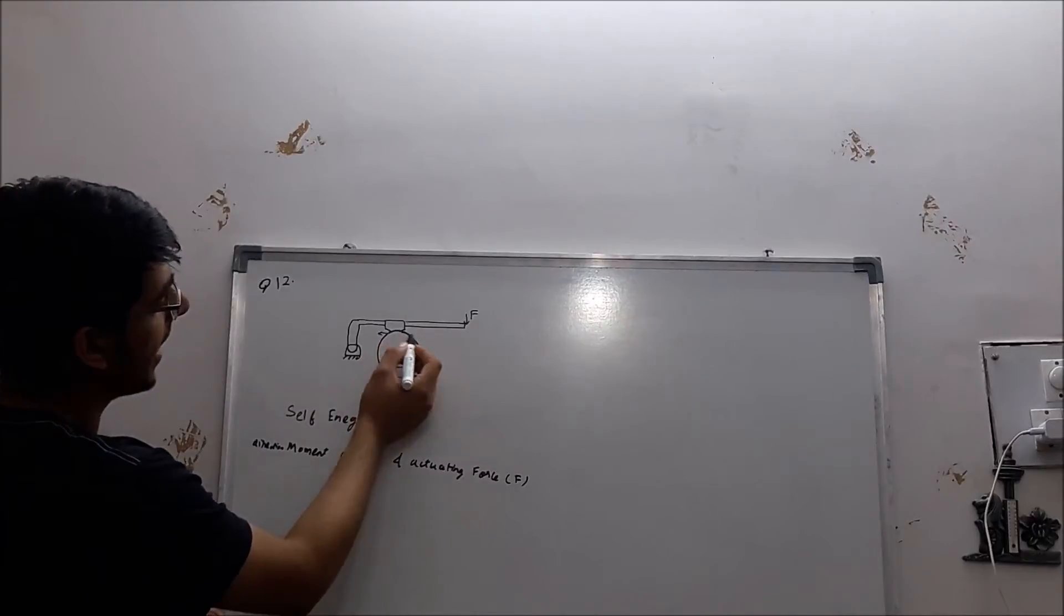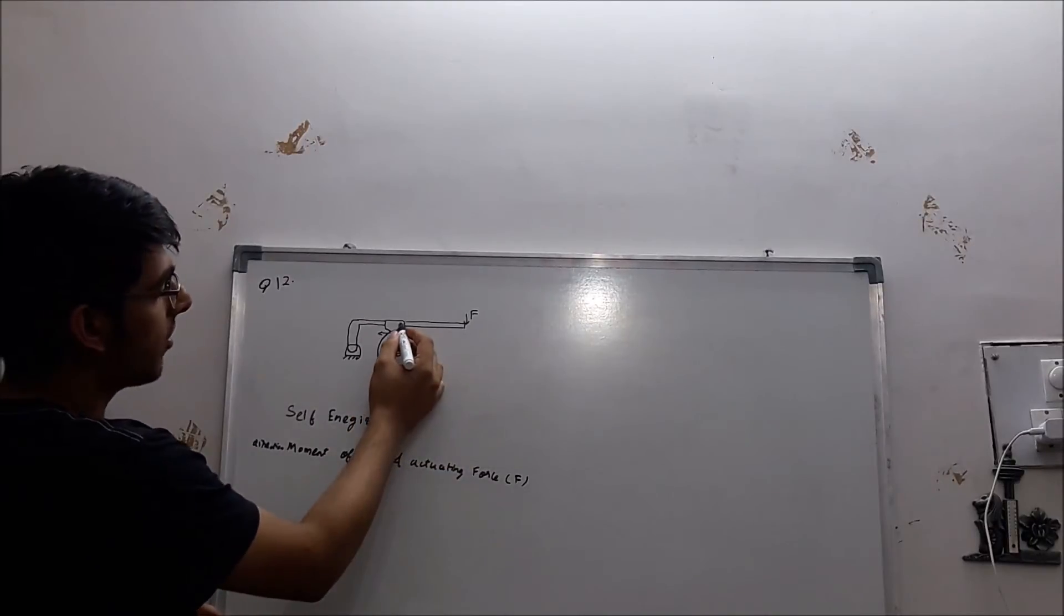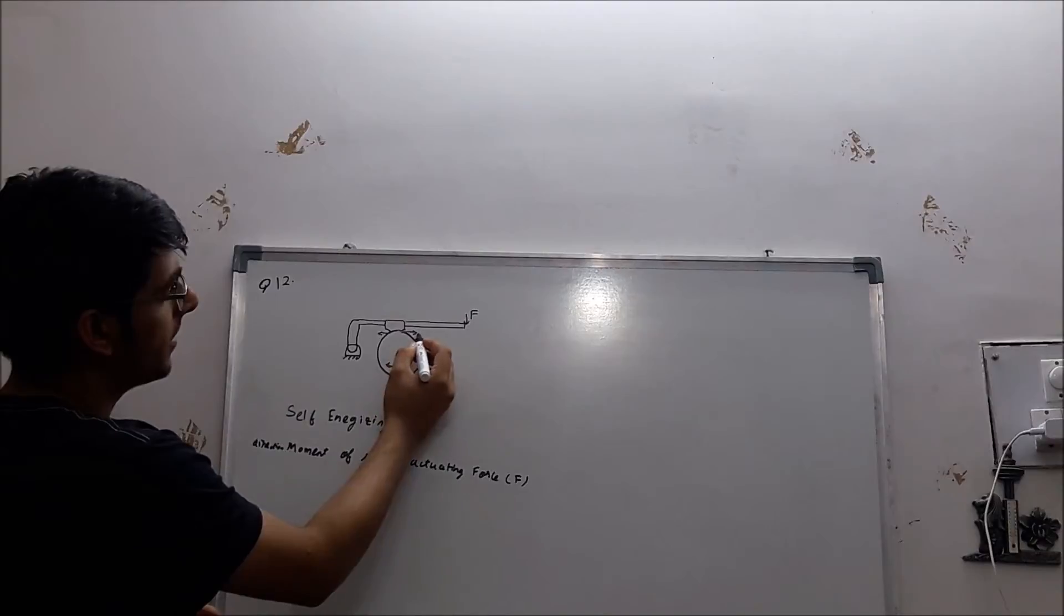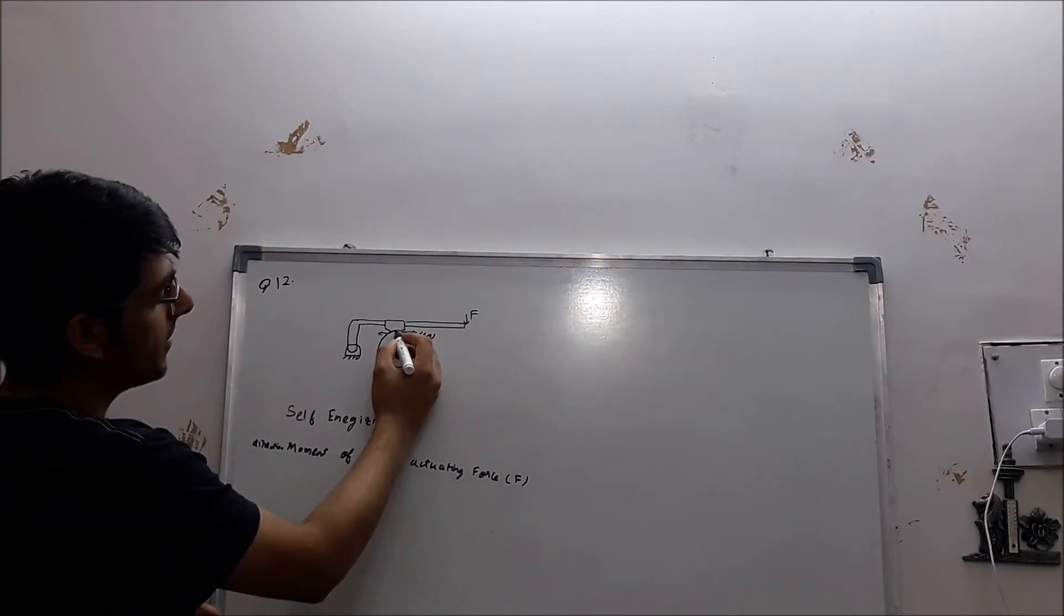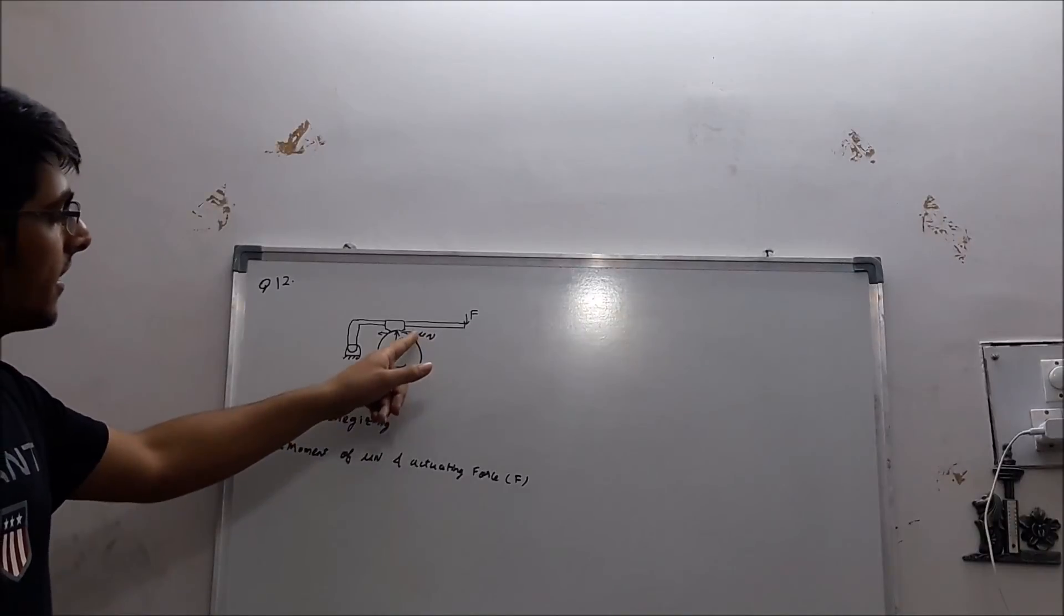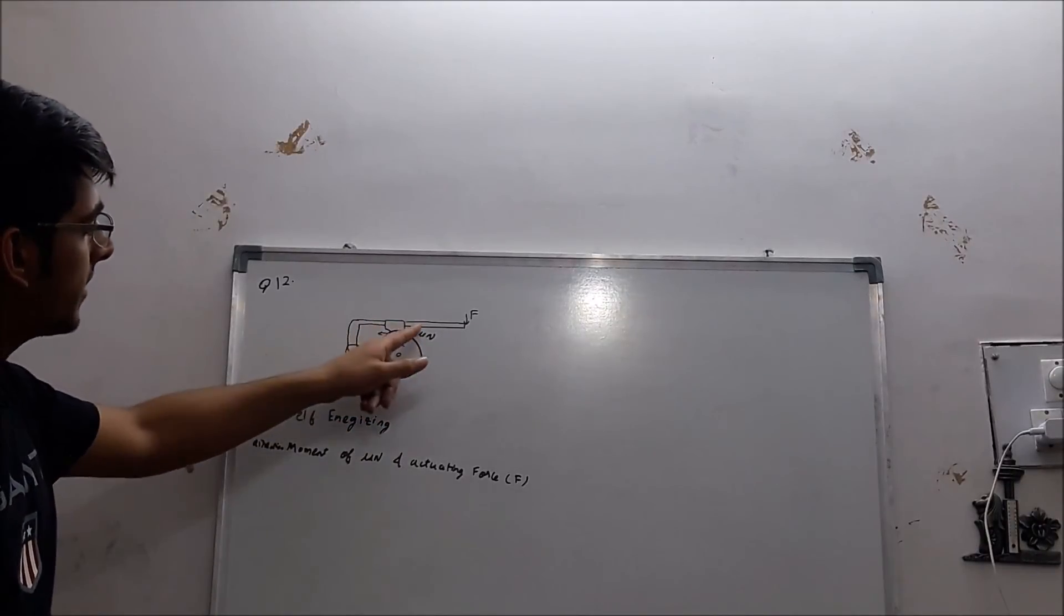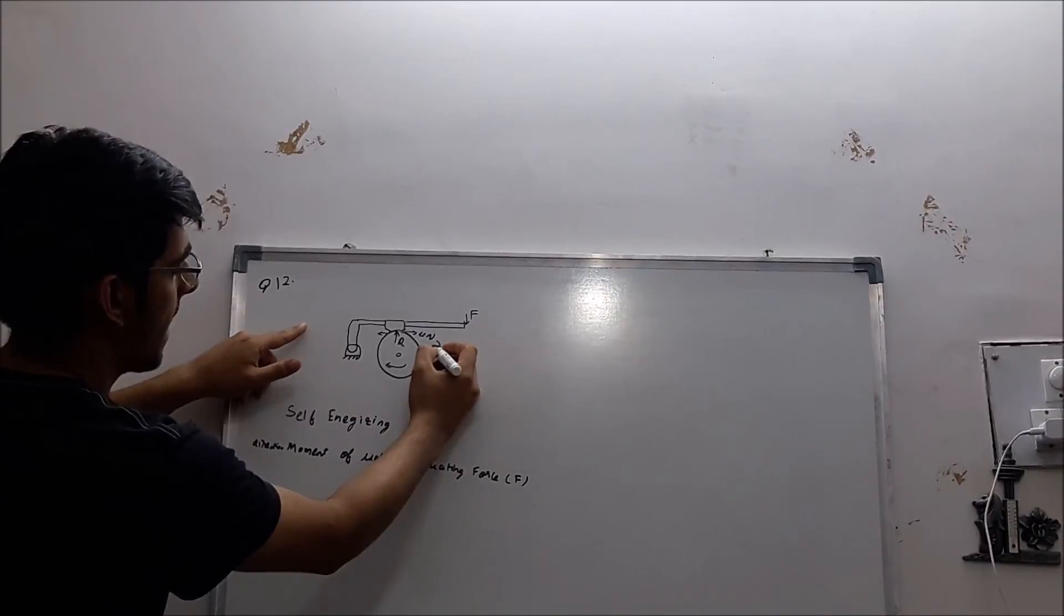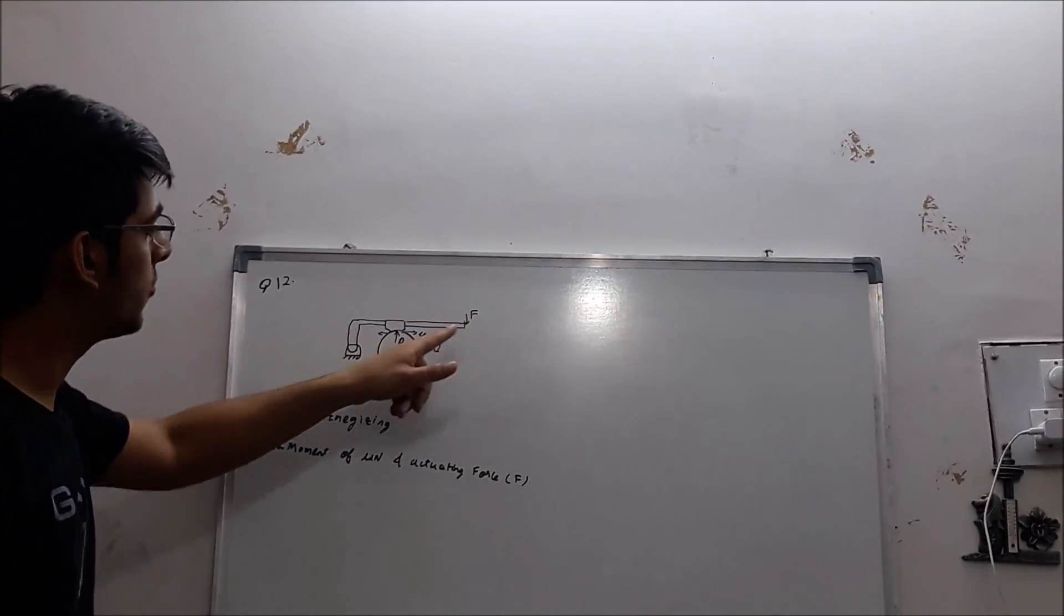The opposite friction will be acting on the shoe brake, that will be mu*n. There will be reaction R. Now this mu*n has a moment about this pivot in this direction.